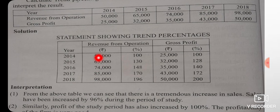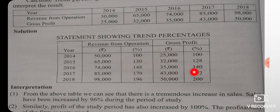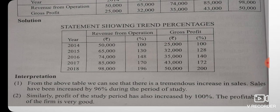For revenue from operations: 15 by 44 per 100. Then 74 by 44 per 100 gives 138; 73 by 44 per 100 gives 196. For gross profit: 24 by 24 per 100 gives 100; then 52 higher than 100 gives 128; 13 gives 140; 43 higher than 100 gives 172; 54 higher than 100 gives 200%.